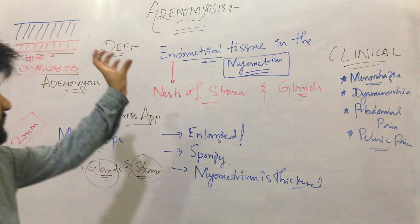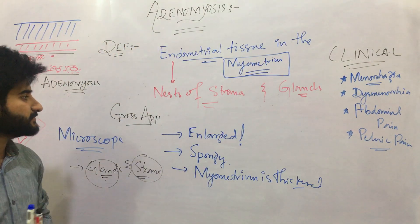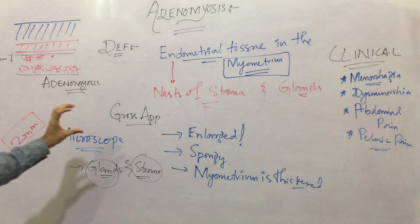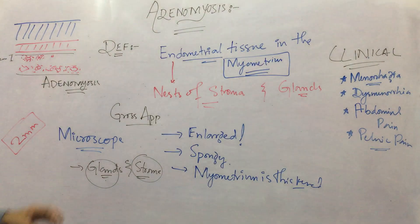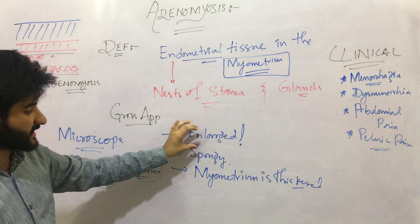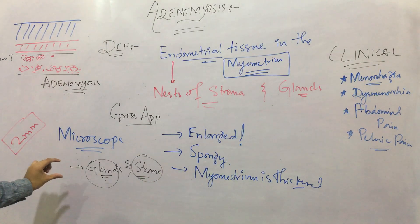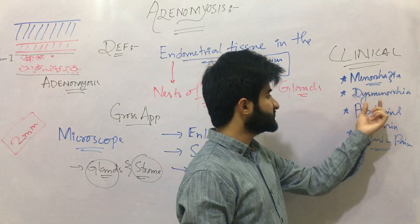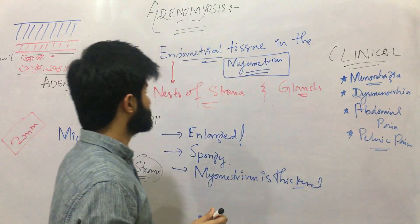To summarize, in Adenomyosis we have growth of endometrial tissue into the myometrium, consisting of nests of both stroma and glands. Grossly, the uterus is enlarged, spongy, and the myometrium is thickened. Under the microscope, we see glands and stroma present beneath the 2 mm limit of the stratum basale. Clinically it manifests as menorrhagia, dysmenorrhea, abdominal pain, and pelvic pain.